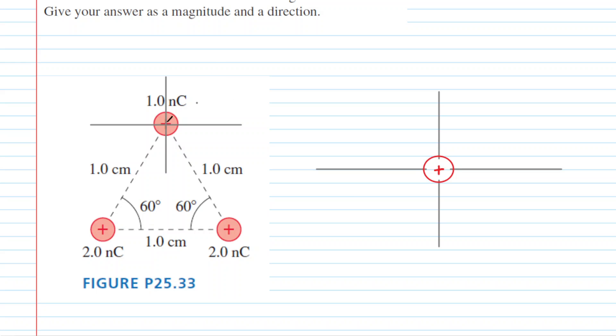The first thing we should do to solve this question is label our charges. We can call the one nanocoulomb charge Q1, the charge at the lower right corner of the triangle Q2, and the remaining charge Q3.